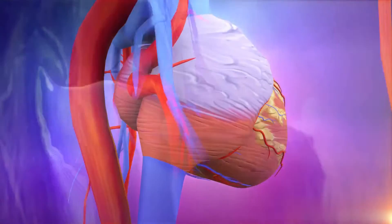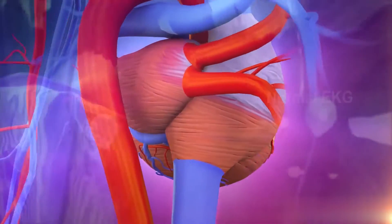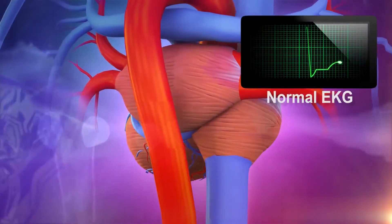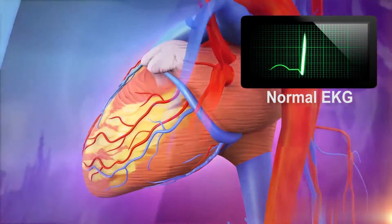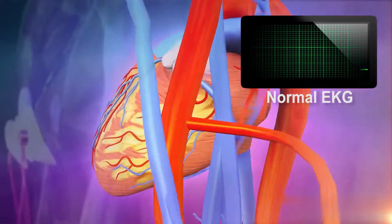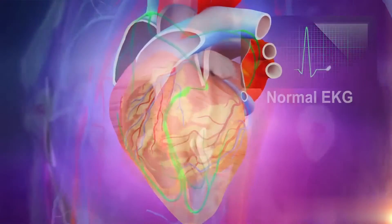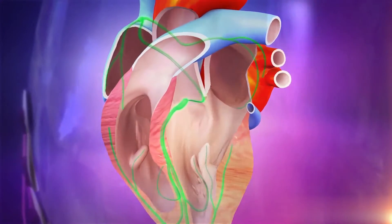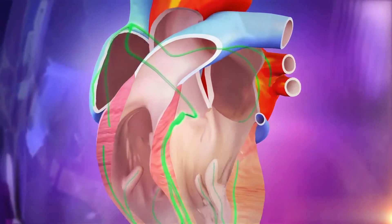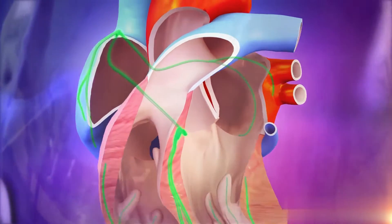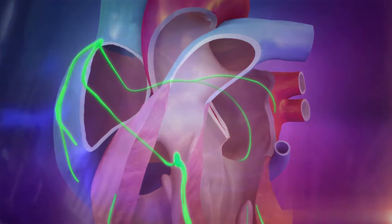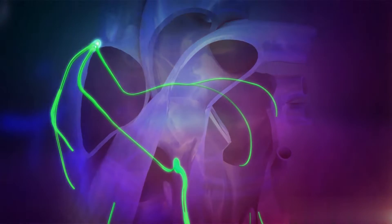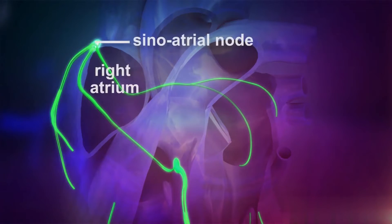A test called an electrocardiogram can measure and record the heart's electrical activity. In a normal heartbeat, the heart's signal follows a specific pathway through the heart. The signal begins in the sinoatrial node, or SA node, located in the right atrium.